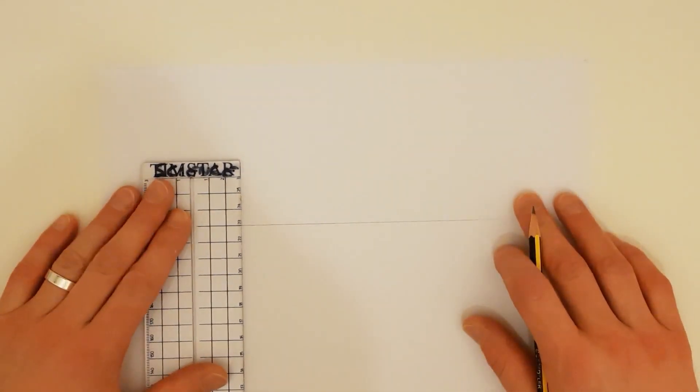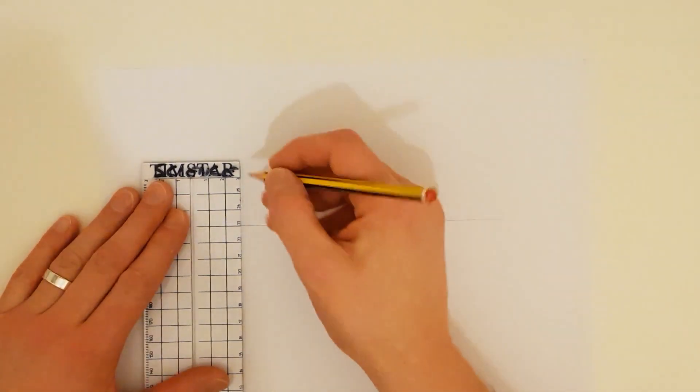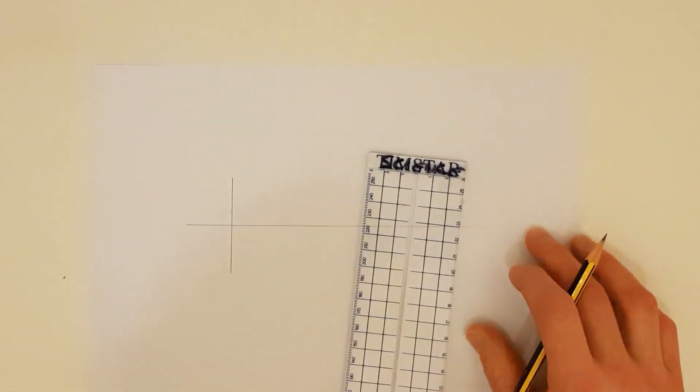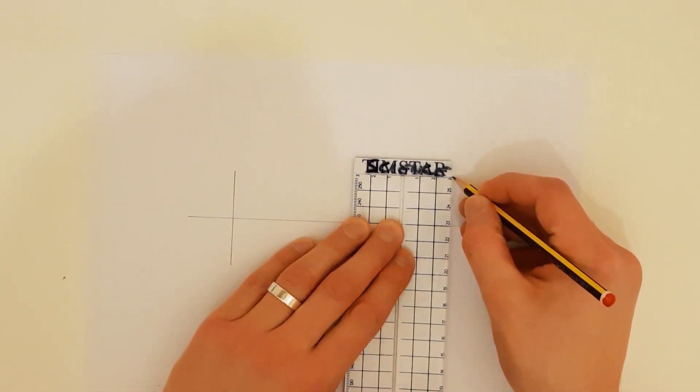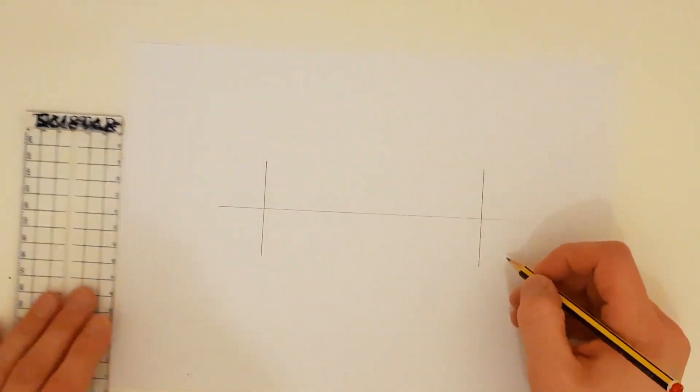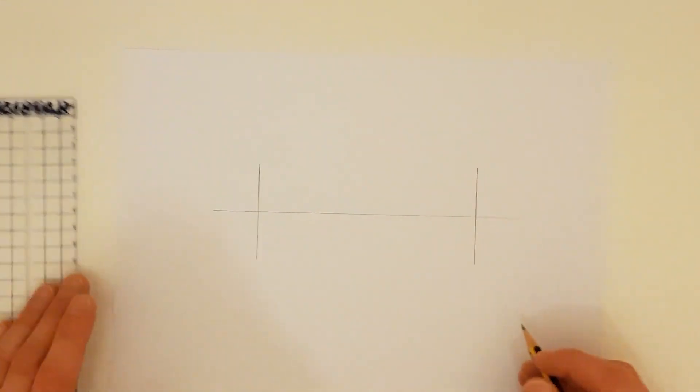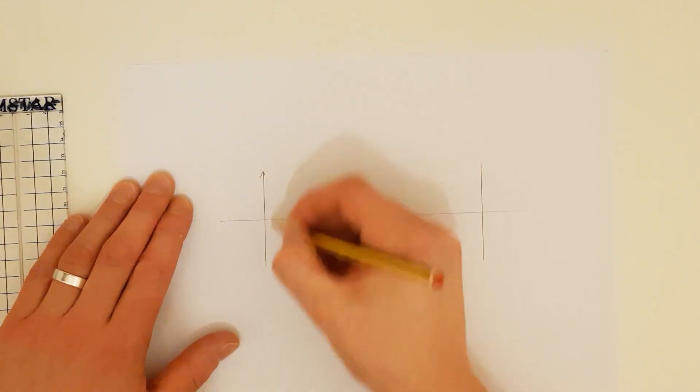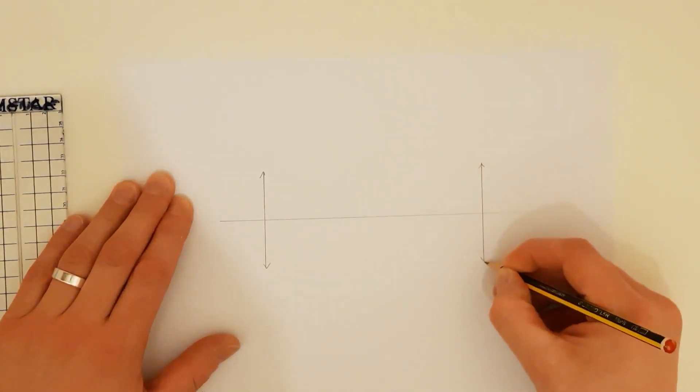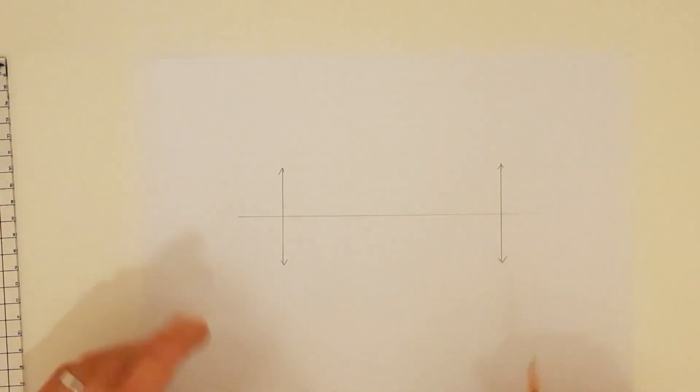We're now going to draw both lenses. You want to draw these a good distance apart so at either end of your principal axis and you want to make sure that these are perpendicular to that principal axis. So make sure your ruler is at right angles to the line you've just drawn. You could draw these as oval shape lenses but it's much easier to draw them with a symbol like this with these hats on like that. So I've drawn two converging lenses at either end.